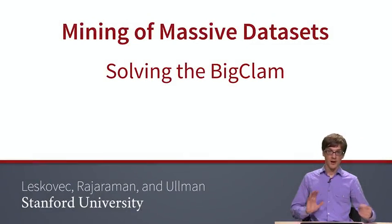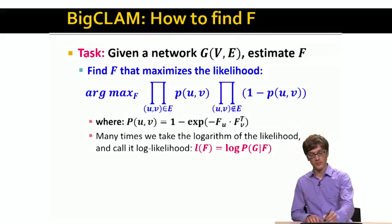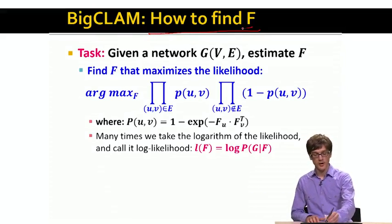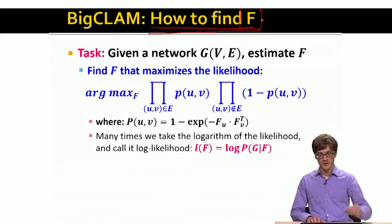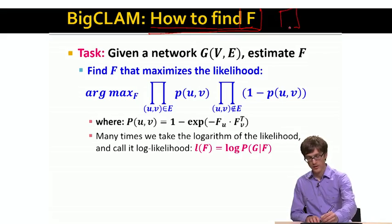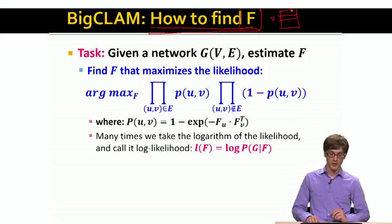So now that we have defined our relaxed version of the affiliation graph model, the whole trick is to say how do we go and find our community affiliation matrix F. This is the matrix where for every node, we know what are the communities that a given node belongs to.